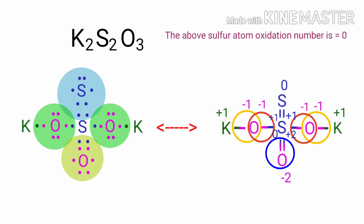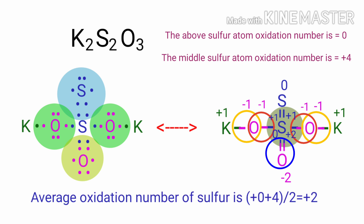Therefore the above sulphur atom has zero oxidation number, and the middle sulphur atom has plus 4 oxidation number, because plus 1 plus 2 plus 1 plus 0 equals plus 4. The three oxygen atoms have minus 2 oxidation number and the two potassium atoms have plus 1 oxidation number. Therefore the average oxidation number of sulphur is (0 + 4) / 2 = plus 2. In potassium thiosulphate, the middle sulphur has plus 4 and the above sulphur has zero, giving an average oxidation number of plus 2.